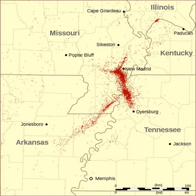Large intraplate earthquakes can inflict heavy damage, with structures in such areas lacking seismic retrofitting. Examples of damaging intraplate earthquakes are the devastating Gujarat earthquake in 2001, the 2012 Indian Ocean earthquakes, the 2017 Puebla earthquake, the 1811–1812 earthquakes in New Madrid, Missouri, and the 1886 earthquake in Charleston, South Carolina.